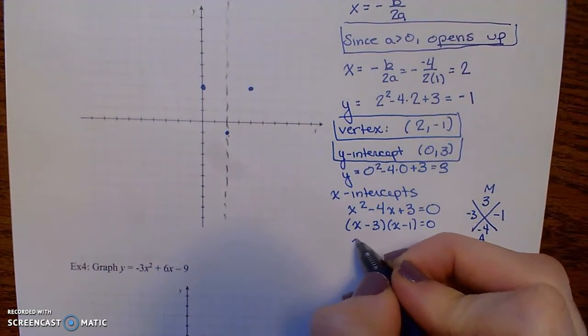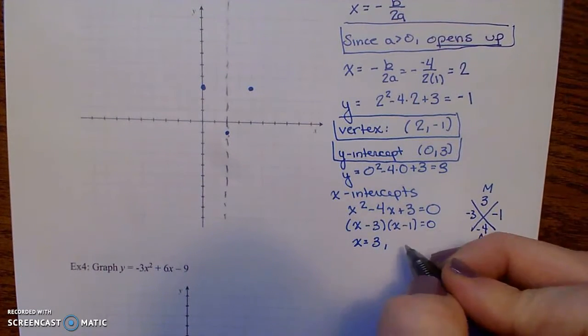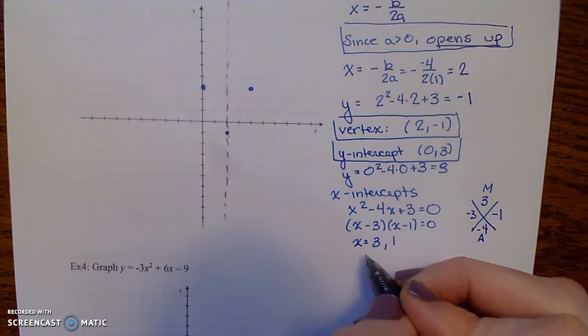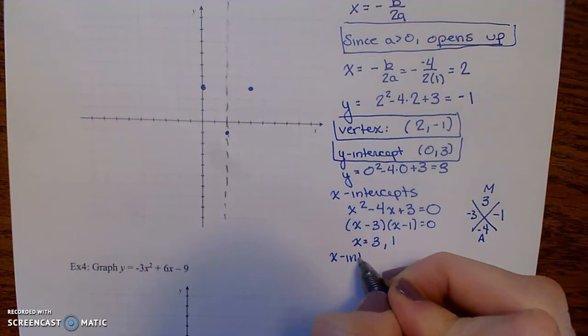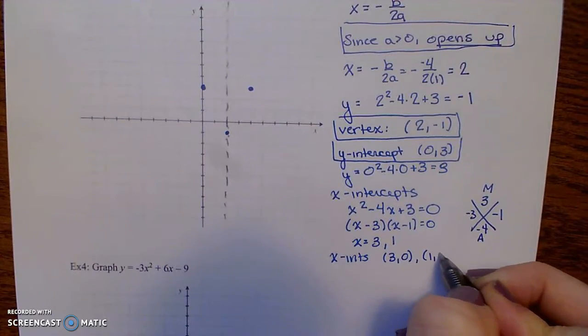So setting x minus 3 equals 0, we get x equals 3. Setting x minus 1 equals 0, we get x equals 1. So my x-intercepts are 3, 0, and 1, 0.